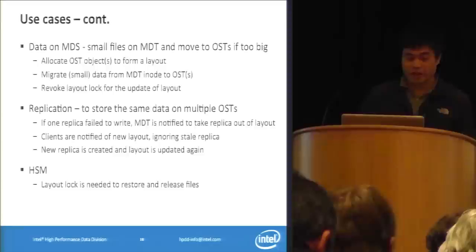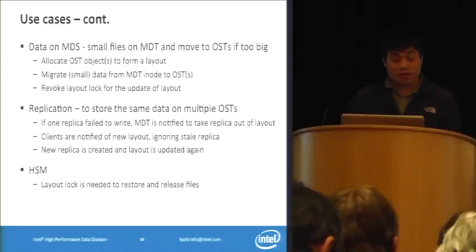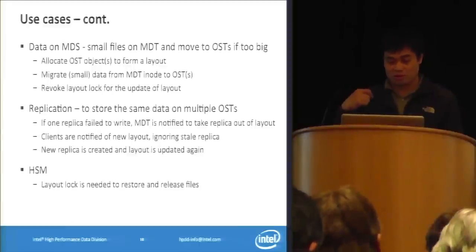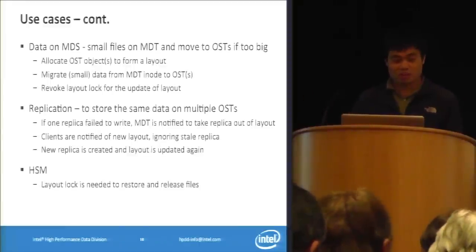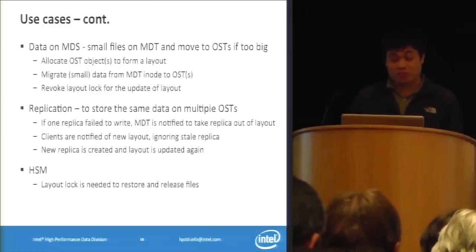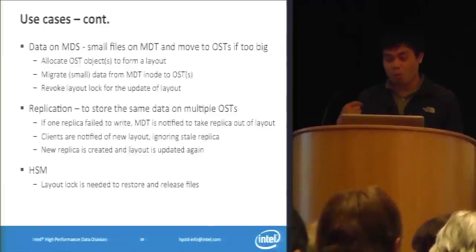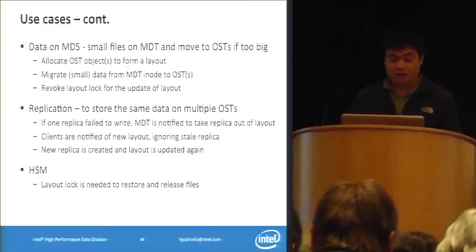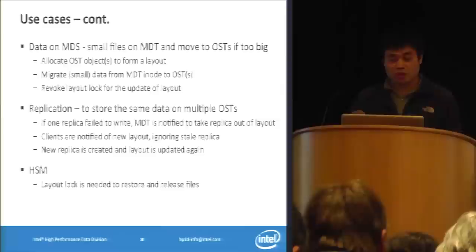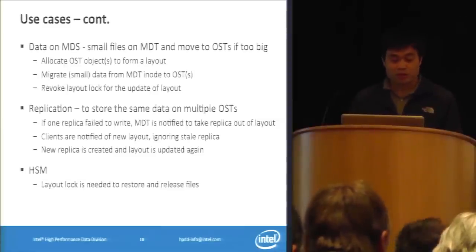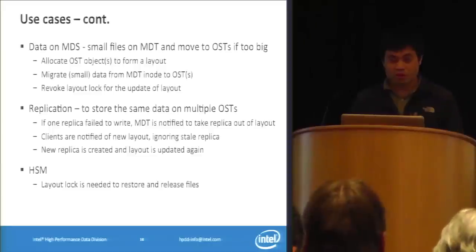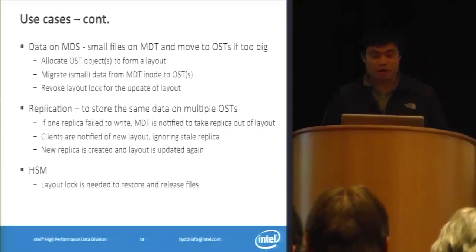Another use case is data on MDS. We usually store small data on the MDT to benefit from fast data access and fewer RPCs. If the file becomes larger, we want to migrate it to the OSTs. When this happens, we allocate OST objects to generate a layout, migrate the small data from MDT to OSTs, and then invoke layout lock so that all clients will be notified of the layout update.